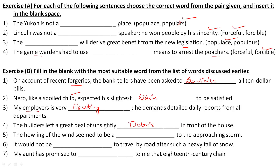The howling of the wind seemed to be a dash to the approaching storm. What does the howling wind indicate? A 'seethe' — meaning boil and bubble. It was a sign of the strong approaching storm.